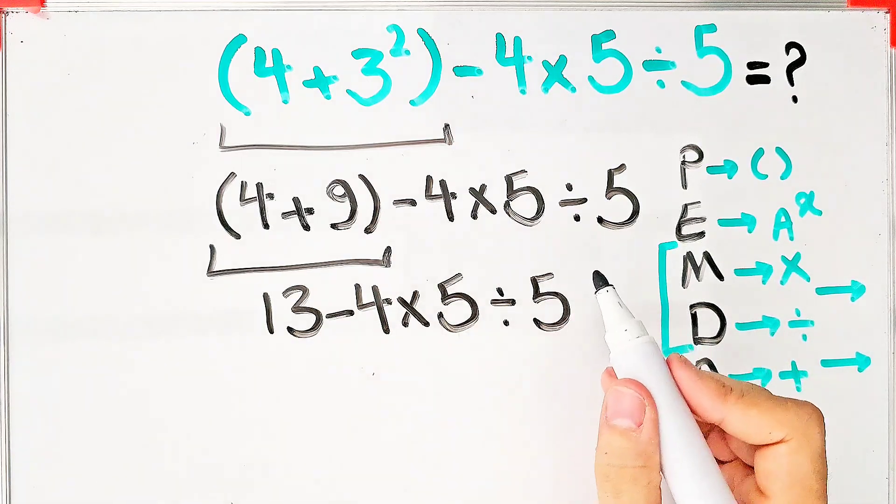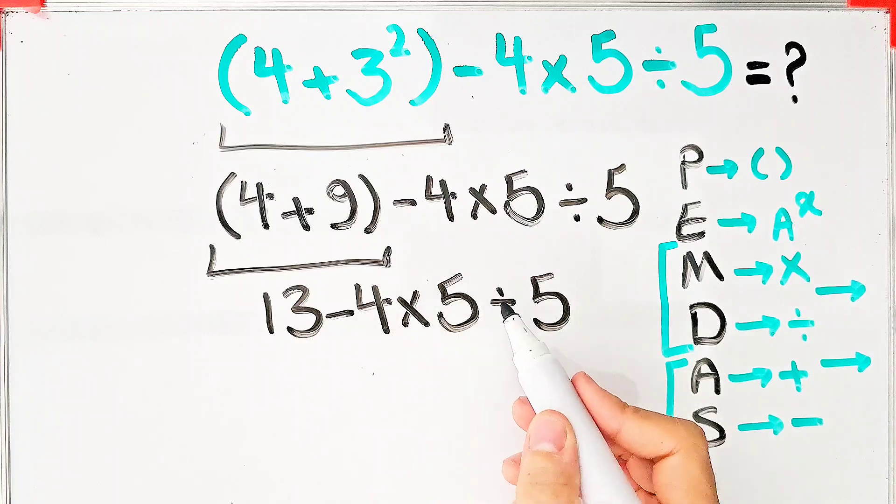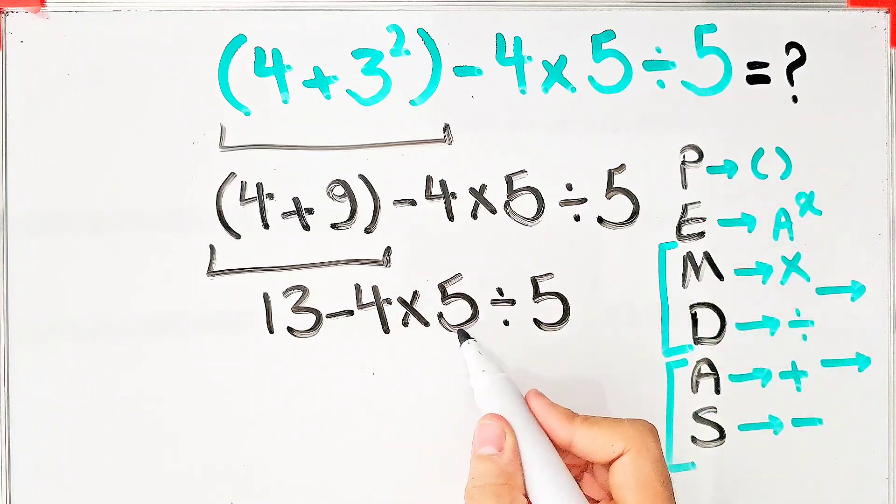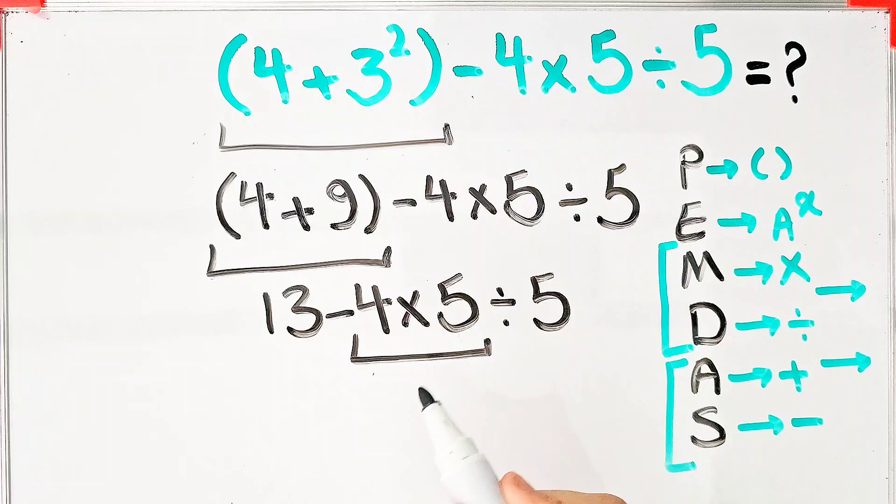In this step, we have subtraction, multiplication, and division. First, we do this multiplication. Negative 4 times 5 equals negative 20.